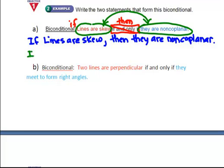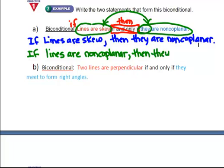So my converse is if. Now, I'm not going to start off with they. What does they refer to? The they refers to as lines. So if lines are non-coplanar, then they are skew. And I wrote the two statements that form the biconditional.